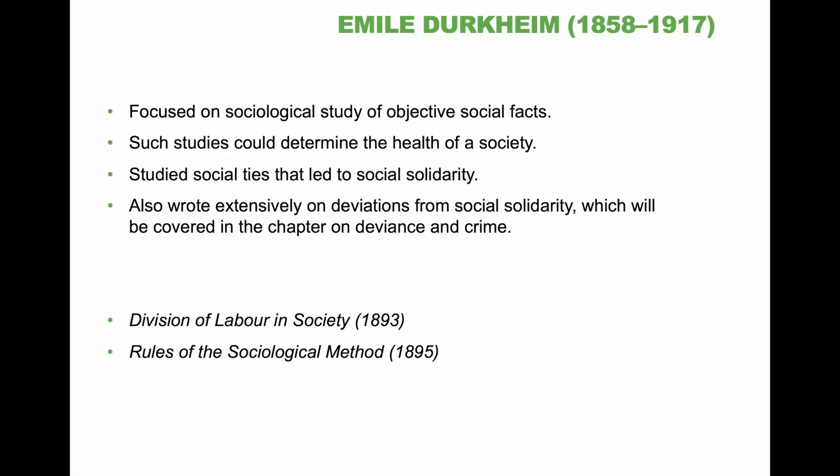Emile Durkheim, 1858–1917. Focused on the sociological study of objective social facts. Such studies could determine the health of a society. He studied social ties that led to social solidarity, and also wrote extensively on deviations from social solidarity, which will be covered in the chapter on deviance and crime. Popular works include Division of Labor and Society, 1893, and Rules of the Sociological Method, 1895.